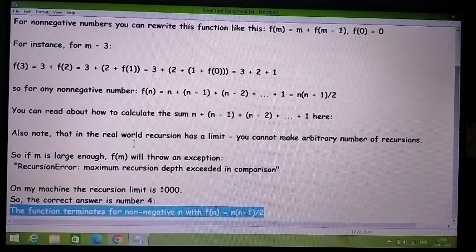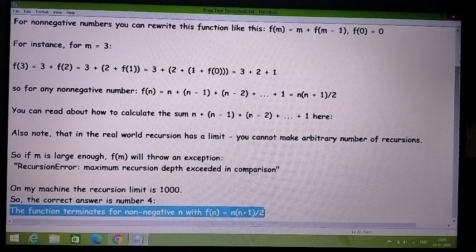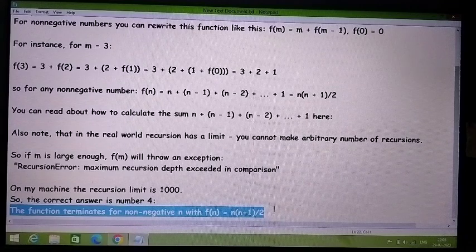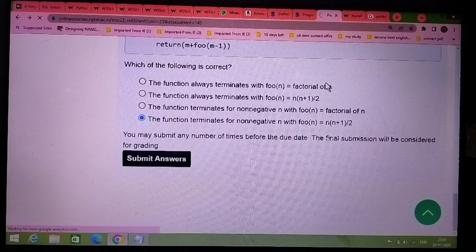So the answer will be—because n is a natural number—the function terminates. For non-negative n, f(n) equals n times (n+1) divided by 2. This is the answer, and we will submit it.